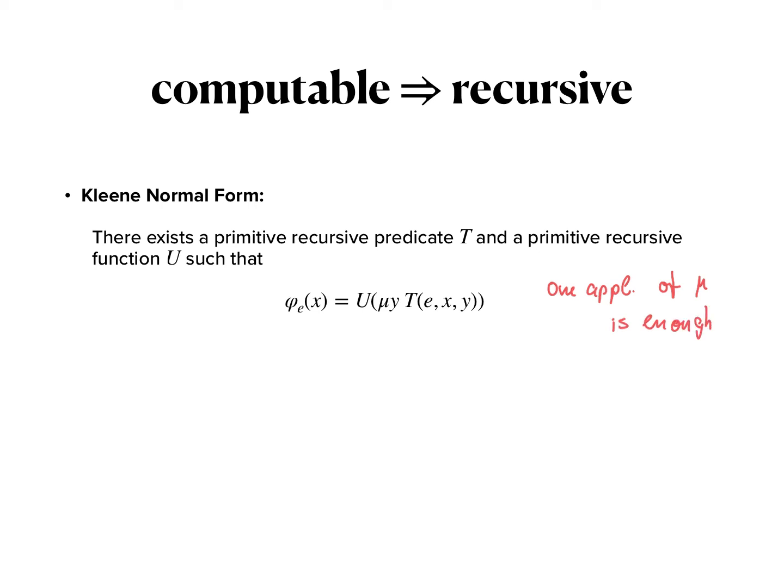The proof of the normal form takes us back to when we first looked at how we can code Turing machines. At that time we not only coded Turing machine programs but we also coded computations of Turing machines. If you recall, we encoded the computation of a Turing machine by encoding its configurations—the position of the read-write-head, the symbol that is currently scanned, the state that it is in and so on.